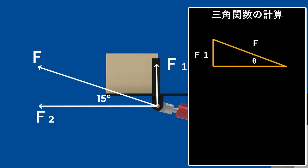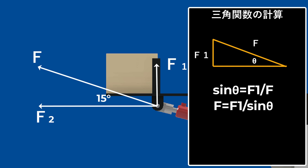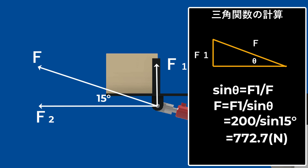それでは具体的な計算に入っていきたいと思います。荷物を持ち上げる力をF1、これを垂直方向の力とします。そして、ジャッキの推力をFとします。ジャッキの取り付いている角度が15度ですので、このF1を計算するには三角関数を使います。sinθ = F1/F ですね。ここからFを算出すると、F = F1/sinθ なので、F = 200/sin15°になります。これを計算すると、Fは772.7Nということになります。